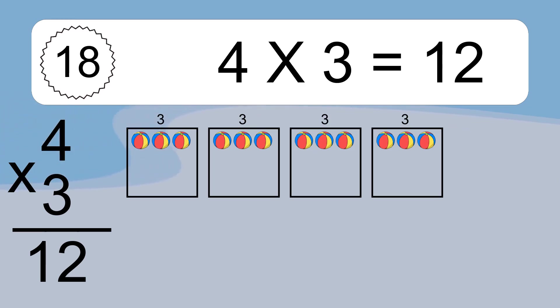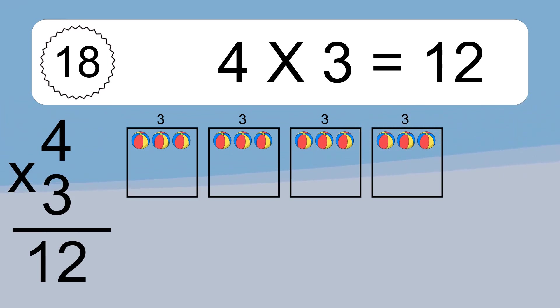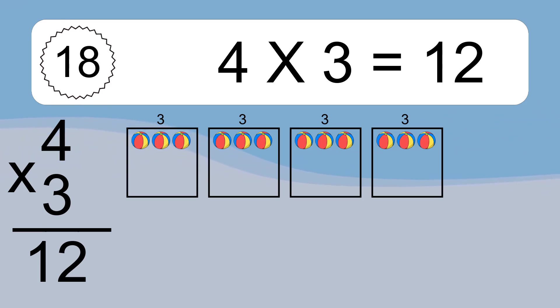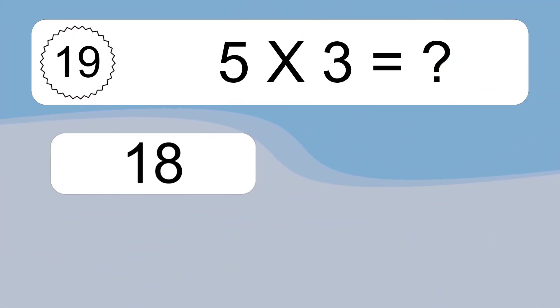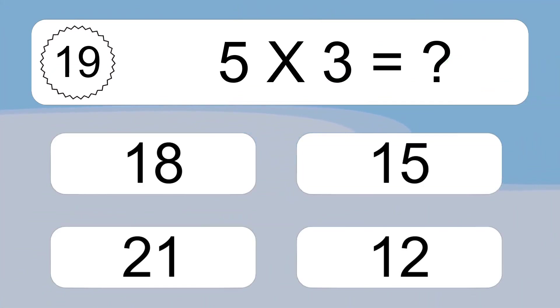4 times 3 equals what? We have 4 boxes, and each box has 3 colorful balls inside. If you count all the balls in all the boxes together, you will have 4 times 3 balls. This equals 12 balls.